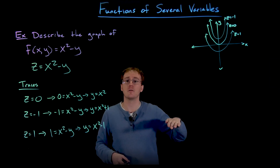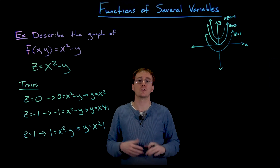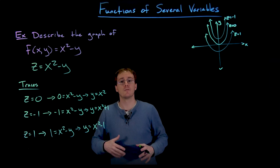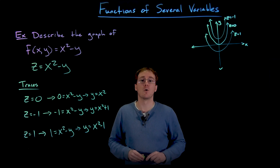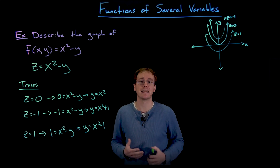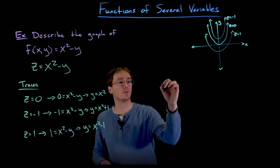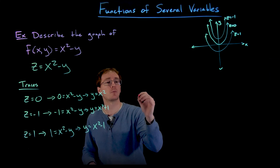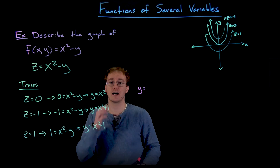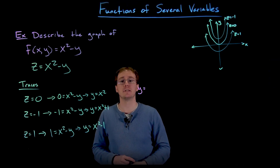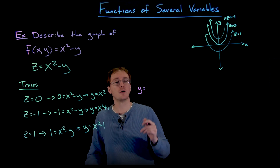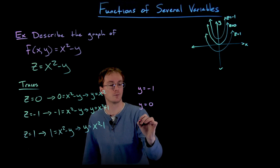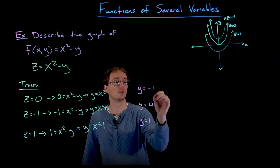Now we have some sense of the shape as we move through different z-values, but it's helpful to look at level curves from different perspectives. If we set y equal to a constant value, we'll get traces that are parallel to the xz plane instead. Let's create a few more traces that are parallel to the xz plane, using y equals negative one, y equals zero, and y equals positive one.